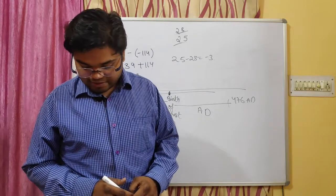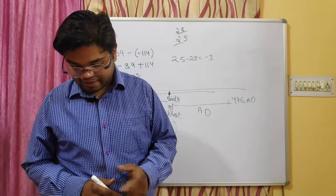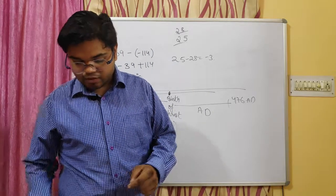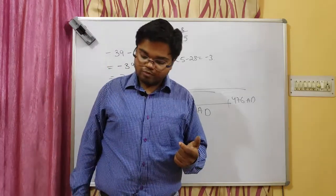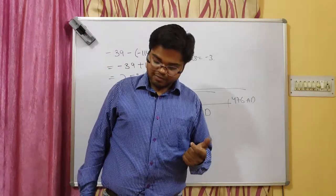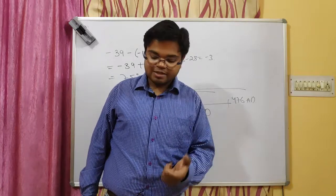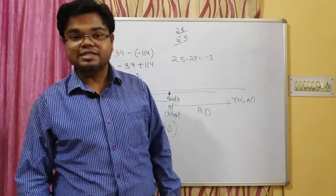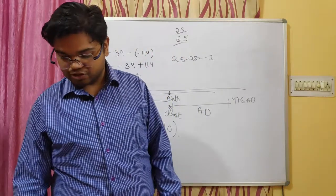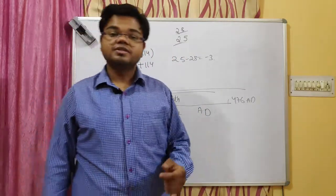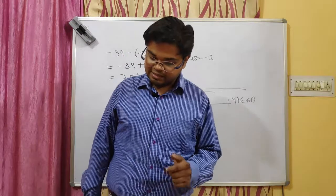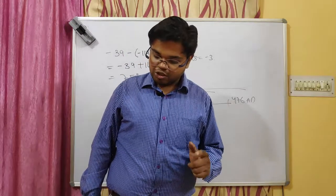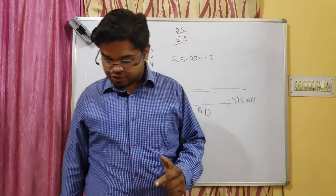Question 13: the absolute value of minus 6 minus minus 6. The absolute value of minus 6 is 6, so 6 minus 6 equals 0. So option D is the answer.